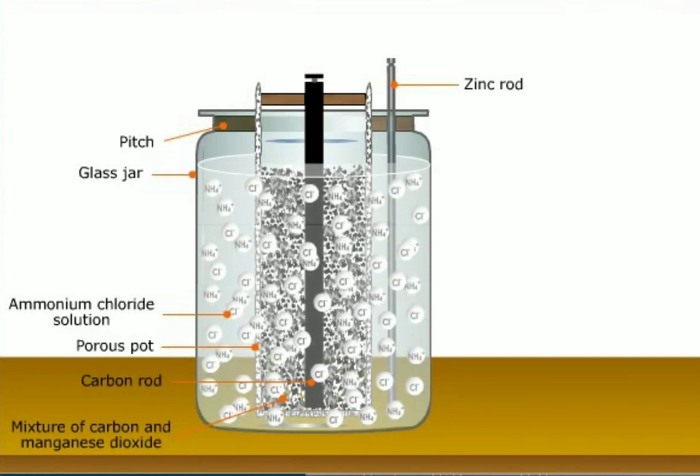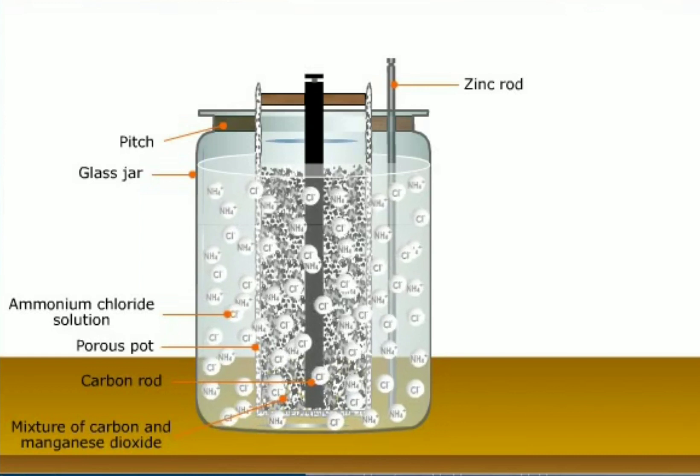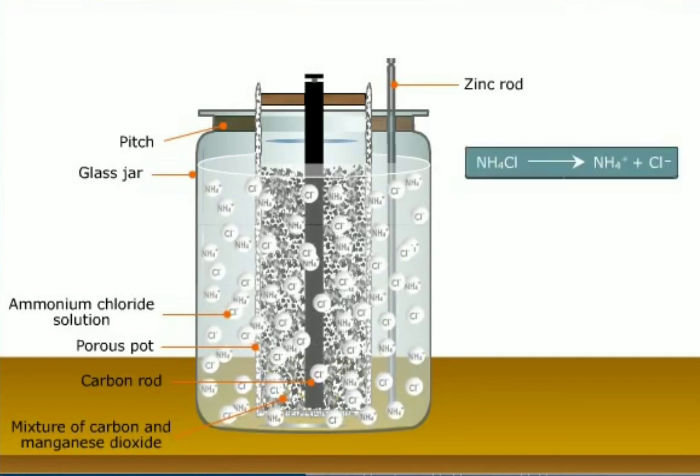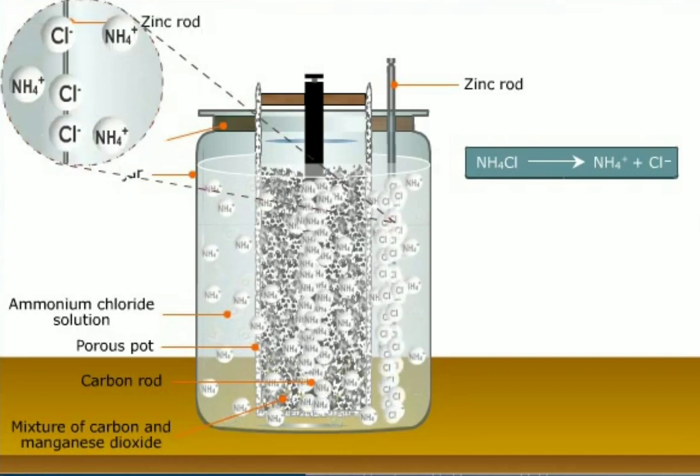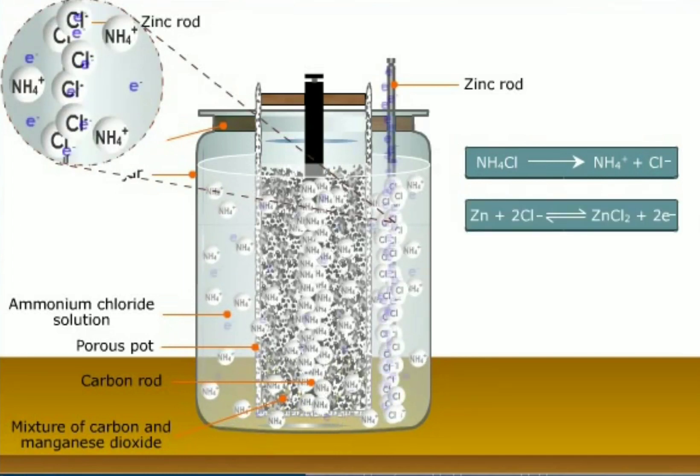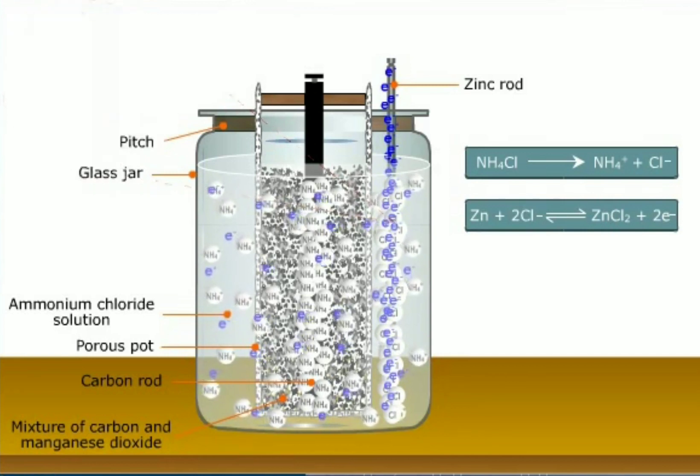Ammonium chloride in the electrolyte splits into ammonium and chloride ions. The chloride ions move towards the zinc rod and transfer their electrons to the zinc rod forming zinc chloride. The zinc rod attains negative charge due to excess of electrons. Thus the zinc rod becomes the cathode, the negative electrode.